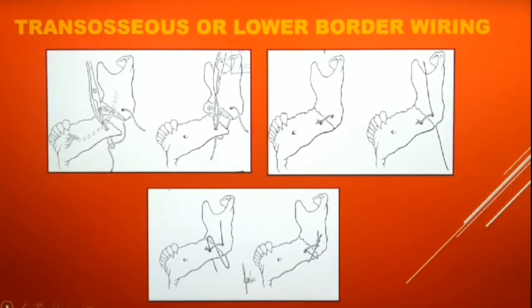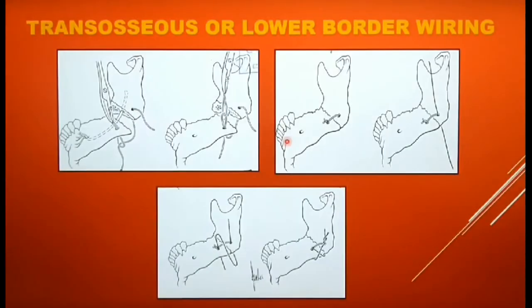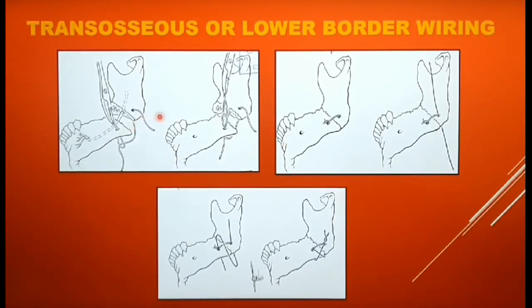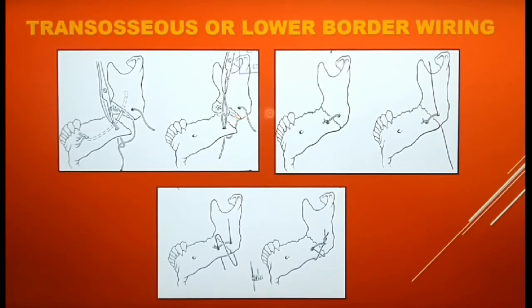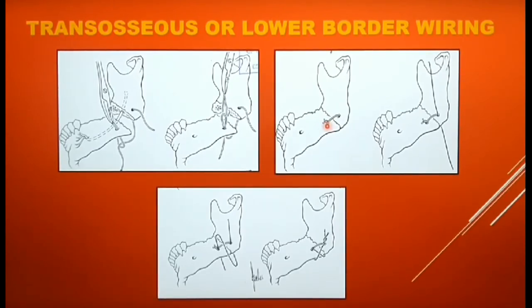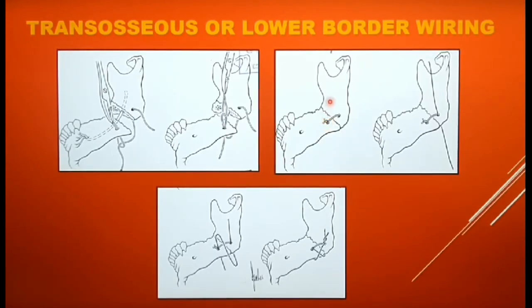The term trans-osseous means across the bone — direct wiring is performed across the fracture line. Holes are drilled across the fracture line and a soft stainless steel wire of 0.45 mm diameter is passed through the holes across the fracture. Accurate reduction of the fractured segments is done by twisting the wires tightly and the twisted wire is tucked into one of the holes. The reduction of the fractured segments should be done with the teeth in occlusion; it is very important to keep the dentition in occlusion while performing fracture fixation.